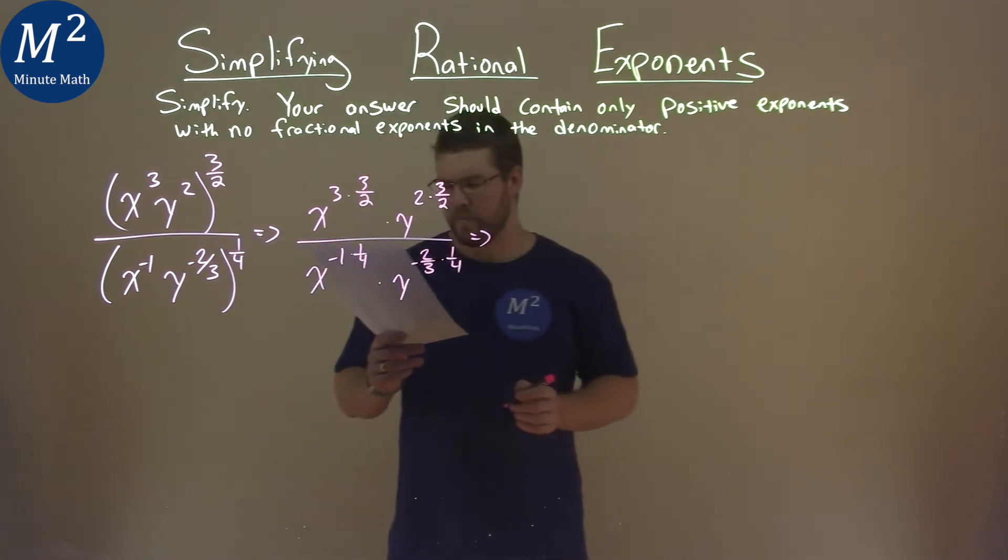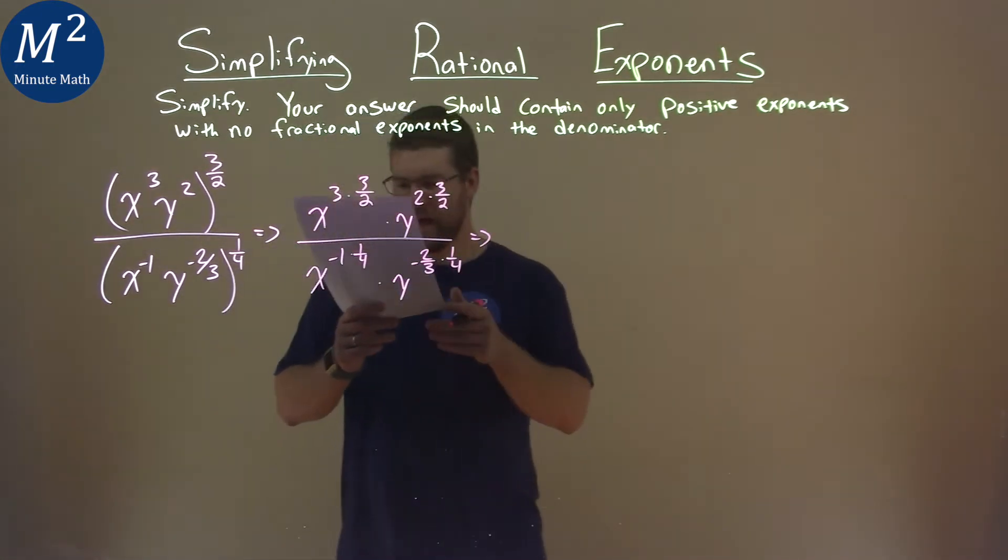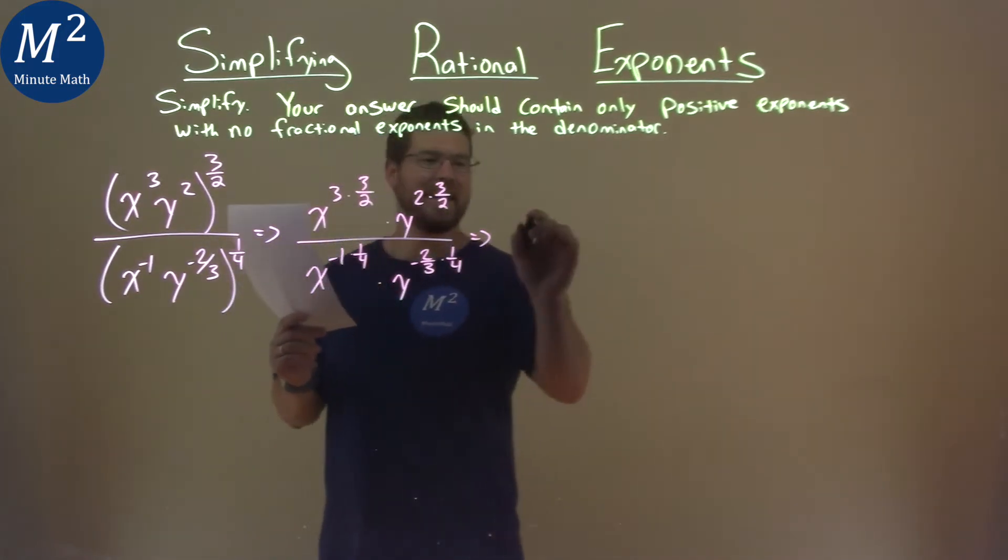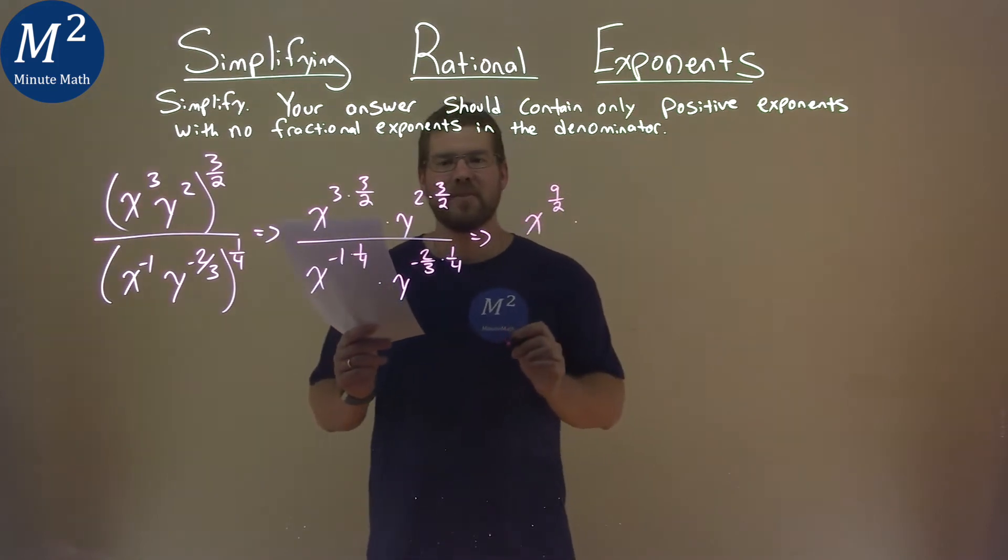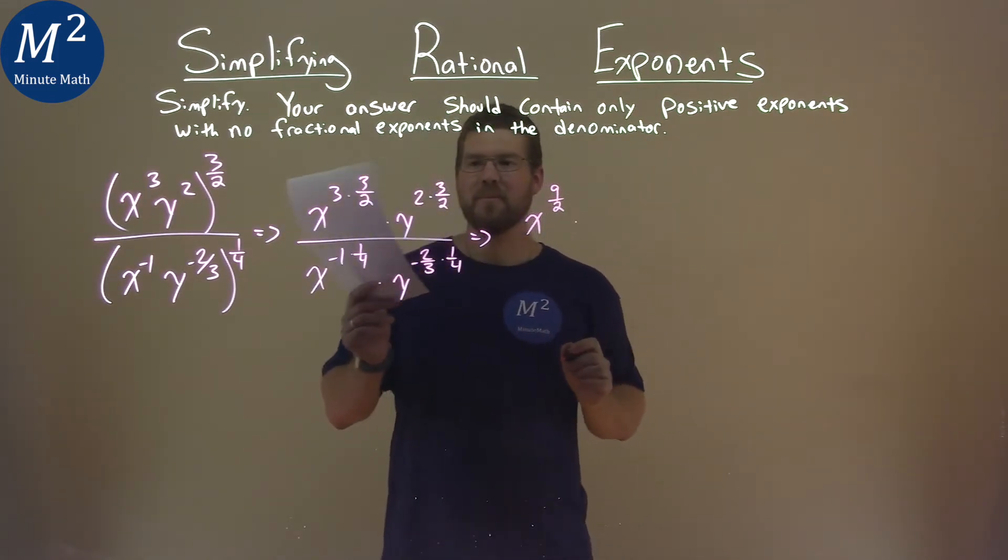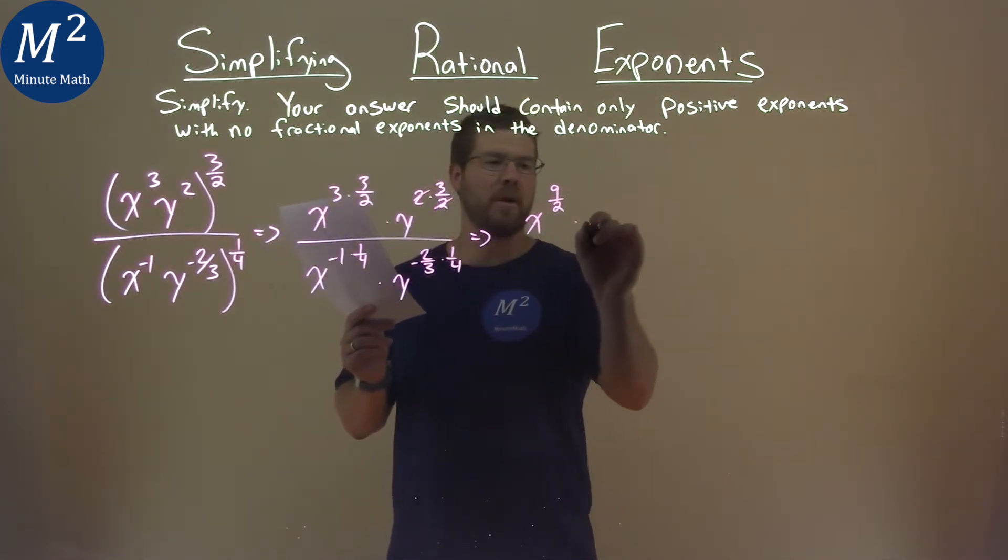So now let's simplify this. Three times three-halves is nine-halves, so we have x to the nine-halves here. Two times three-halves, the twos cancel, right? And we have y to the third power.